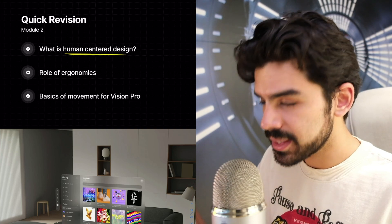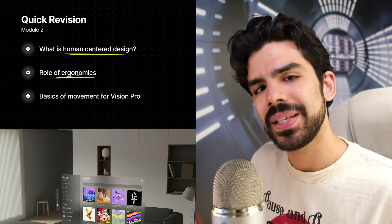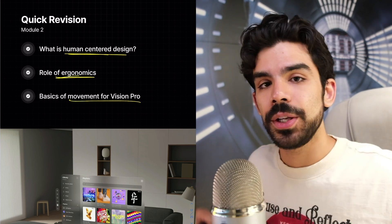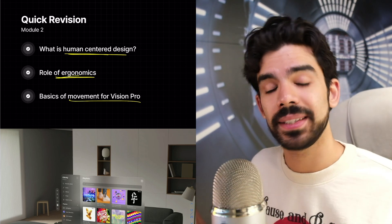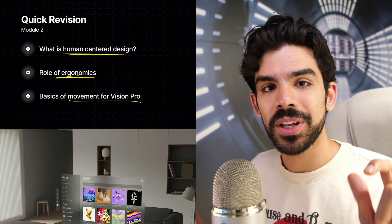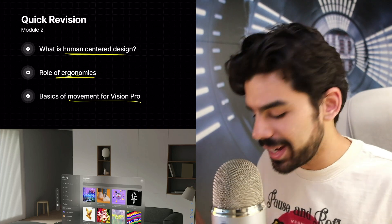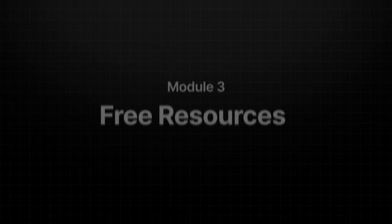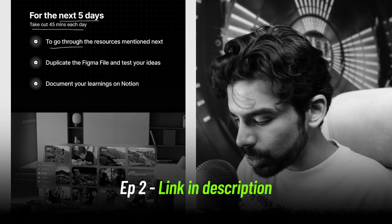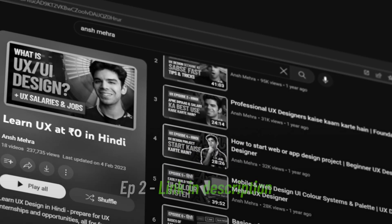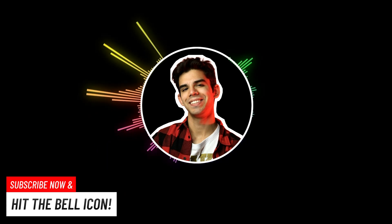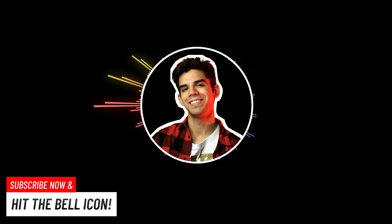With that we finish module two. We understood human-centered design, the role of ergonomics, basics of movement within Vision Pro, and the guideline that content should be further than one arm's distance away with minimal movement required. Connecting this with episode one and two on familiar experiences, a lot of things should now be making sense. The resources from module three remain the same as previous episodes — they're in the PDF, which you can download for free from the link in the description. Subscribe and hit the bell icon for new episodes on UX and spatial design.